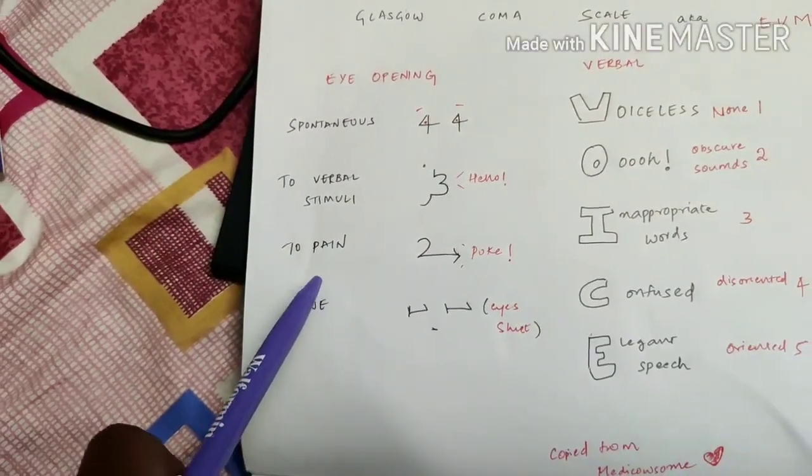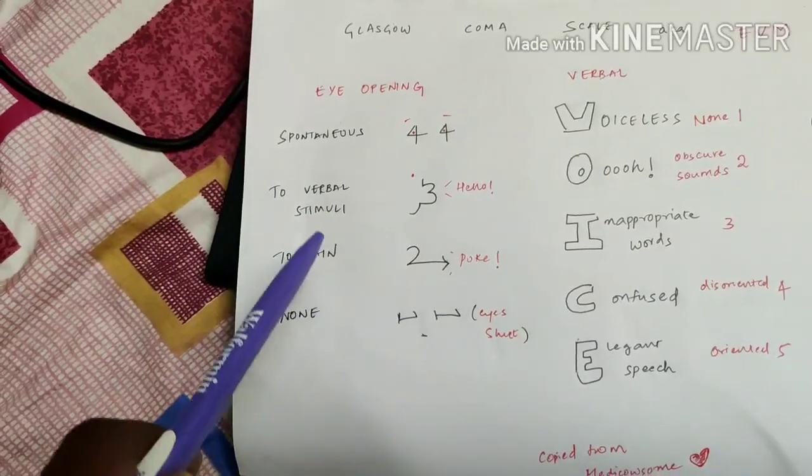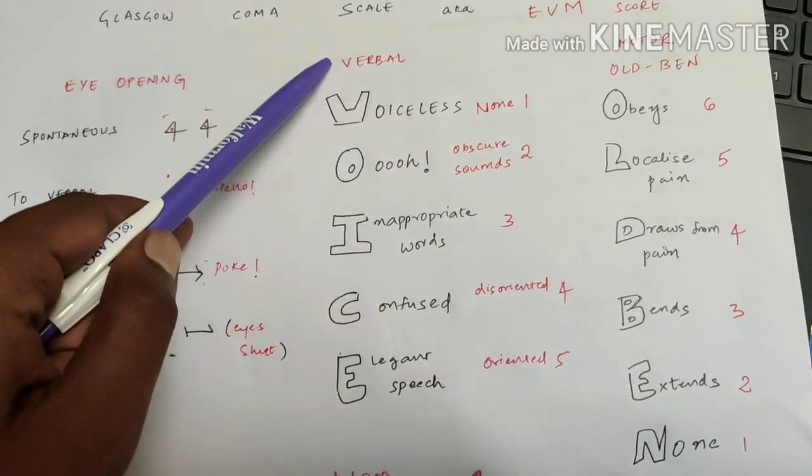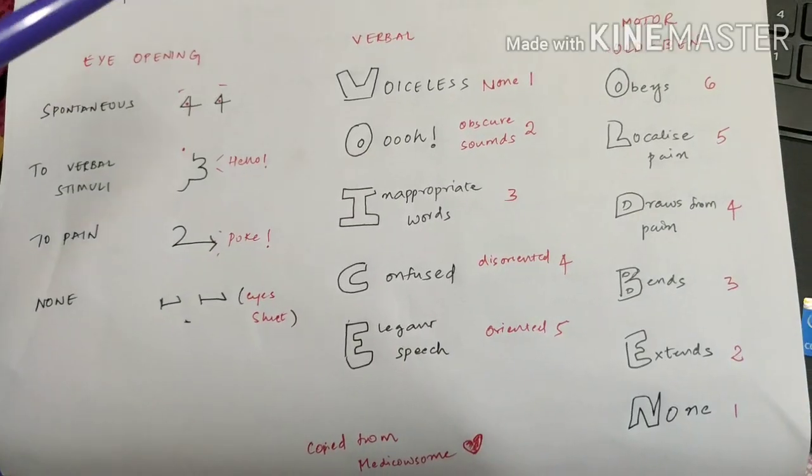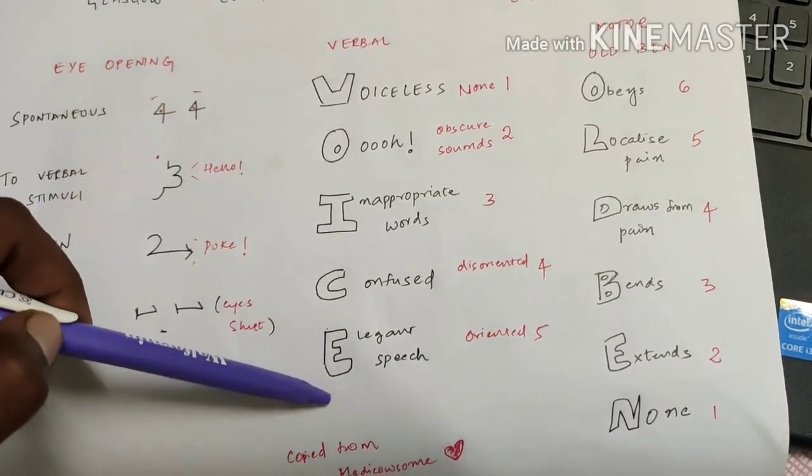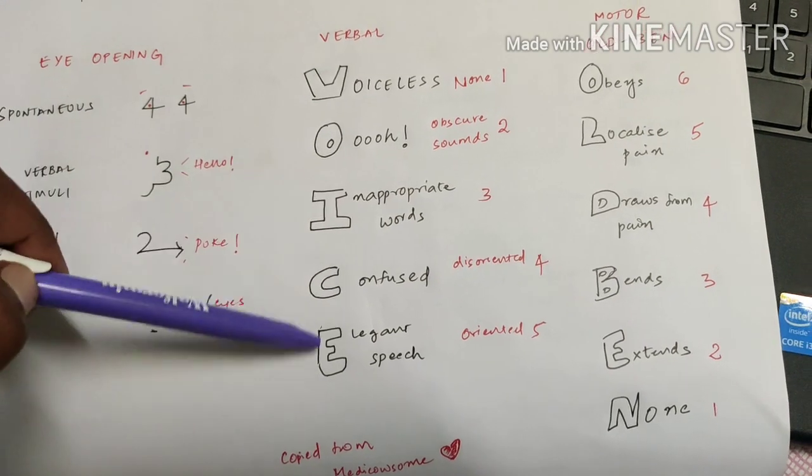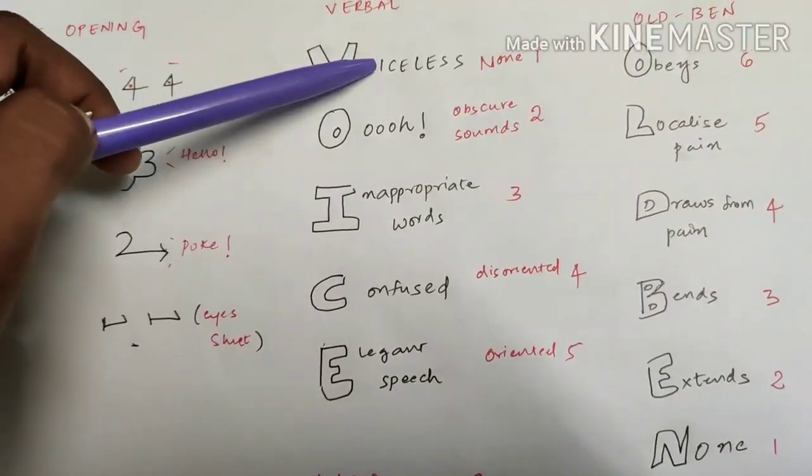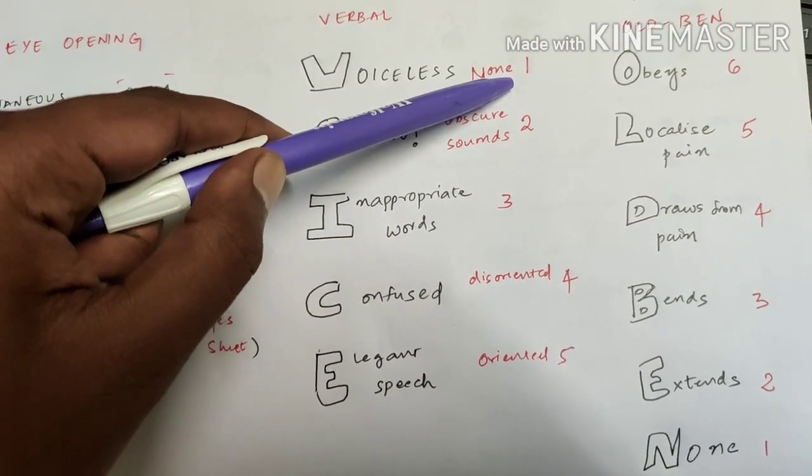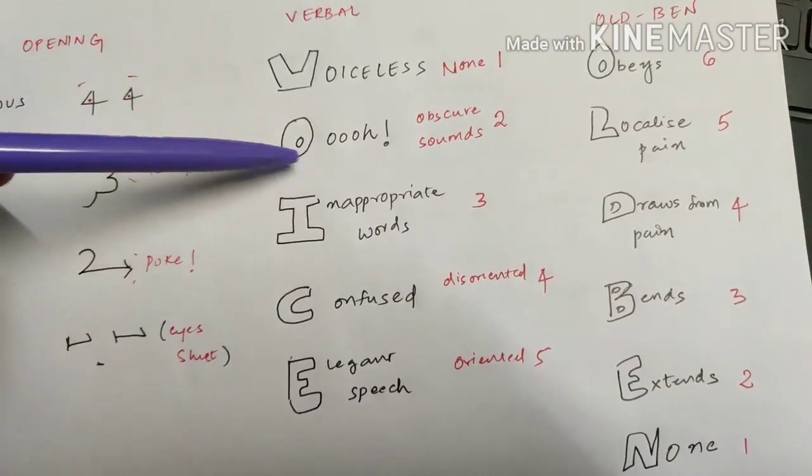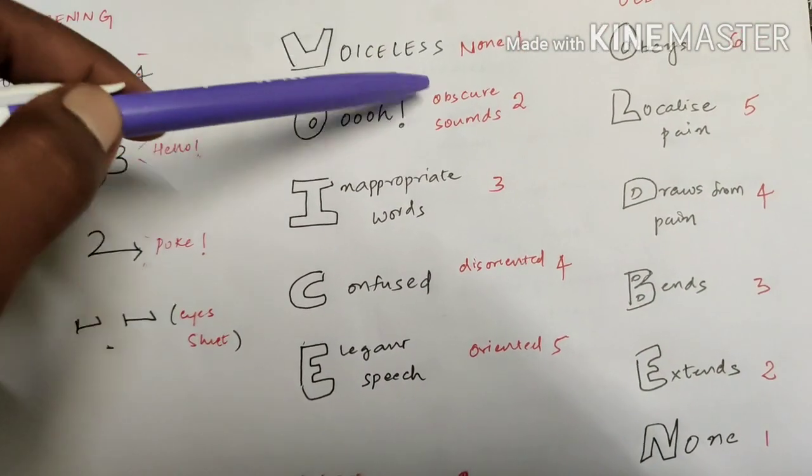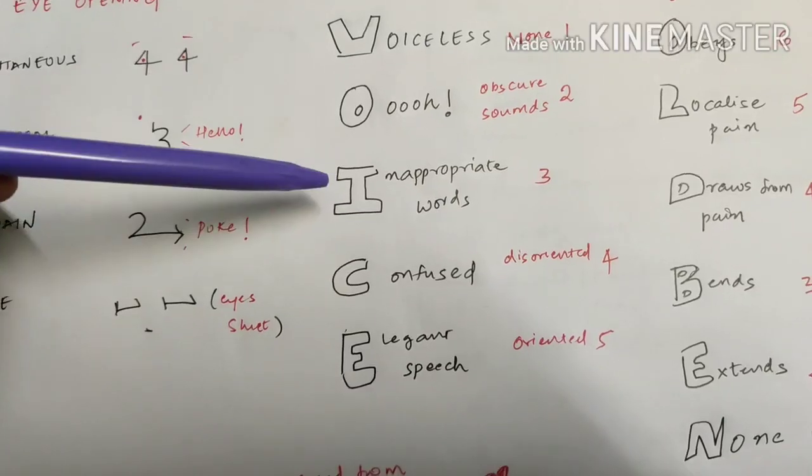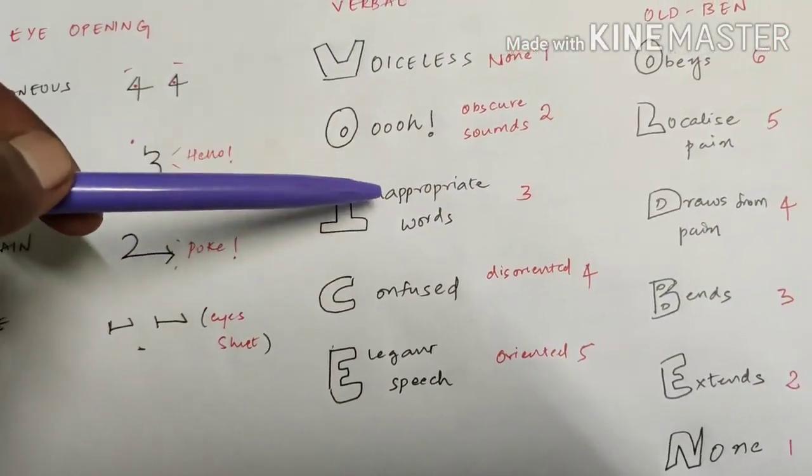Once eye opening is done, you will move to verbal scoring. Glasgow's Coma Scale second part is verbal scoring. I made a mnemonic - voice. Not me, medicosm made a mnemonic voice. It is easy to remember. See it: V for voiceless, no voice at all - you give it score one. O for obscure sounds - you give it two.